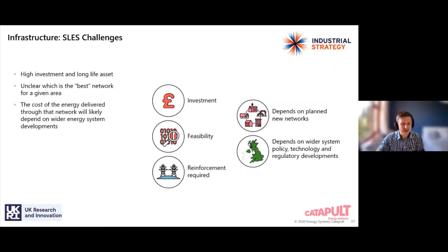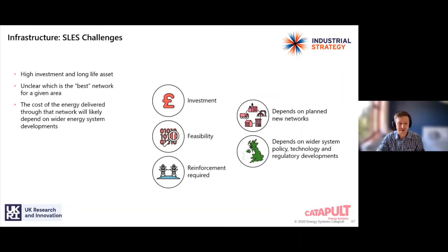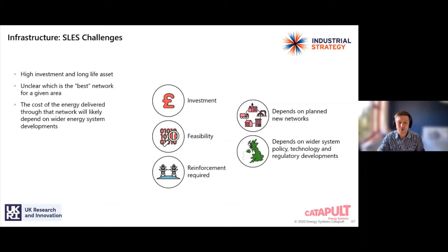A second infrastructure challenge that smart local energy systems have in common with decarbonizing energy systems is the choice of decarbonization strategy, which will often have substantial infrastructure costs that are either directly recovered from consumers in the local area or socialized. From a whole-system perspective, wider deployment of smart local energy systems will require coordination and integration with neighboring and wider energy systems in order to minimize whole-system infrastructure costs that will eventually be paid for by the consumer.